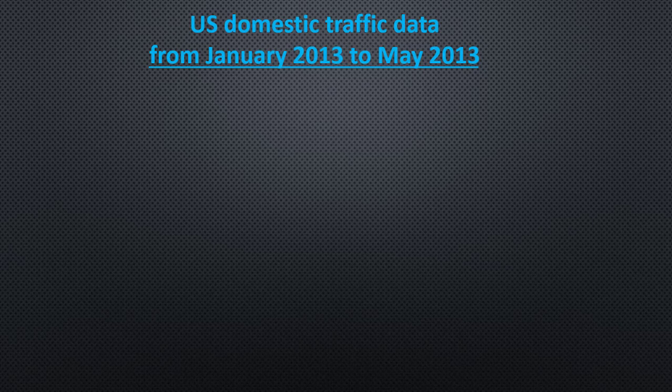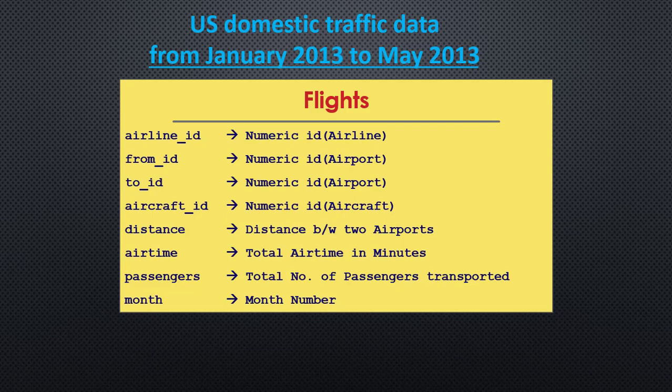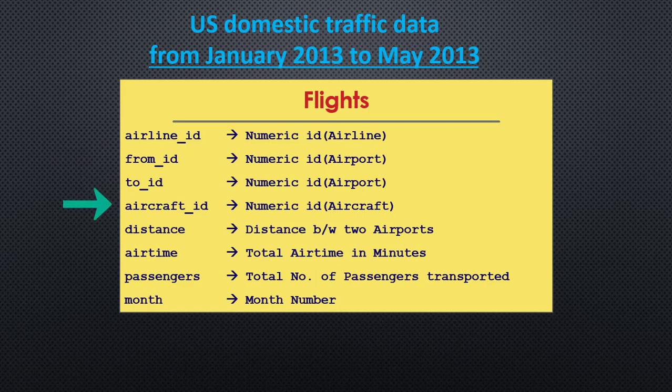Now let's head towards the task. As I said, it is US domestic air traffic data, so the first part of our database is for the flights and is available in a CSV file. One flight data contains different information — for example, the airline ID, which will specify the airline company. There is another part of the database for the airlines, and this ID will link the information of the flight with that part of the database. Then there are two IDs: from ID and to ID. These refer to the IDs of the airports the flight originated from and is destined to.